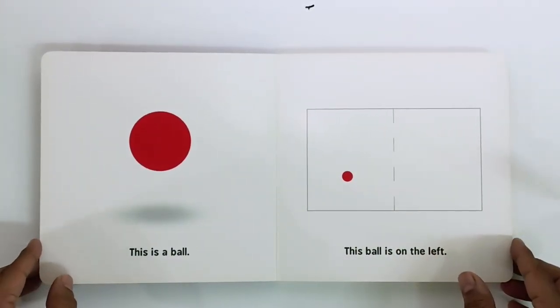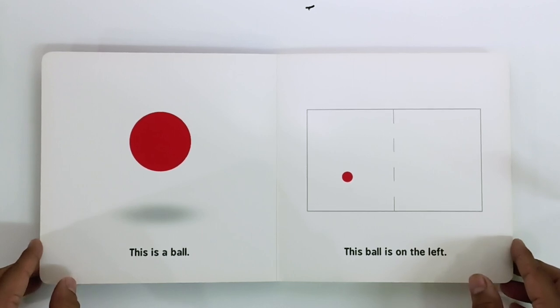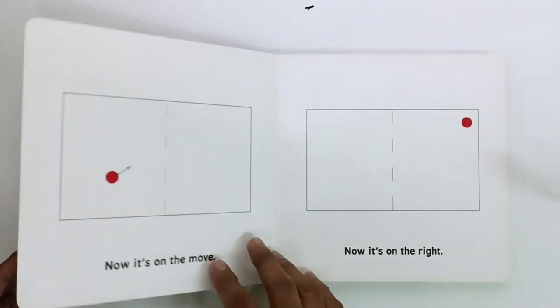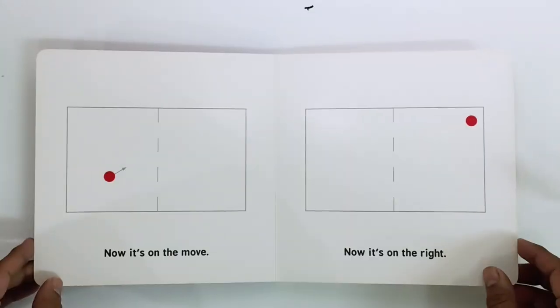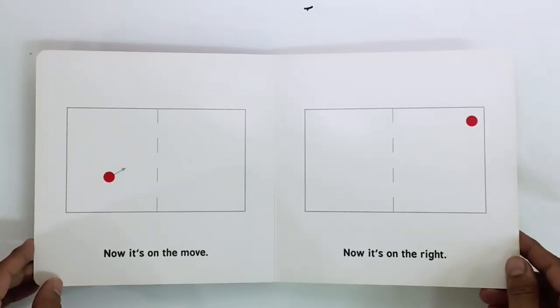This is a ball. This ball is on the left. Now it's on the move. Now it's on the right.